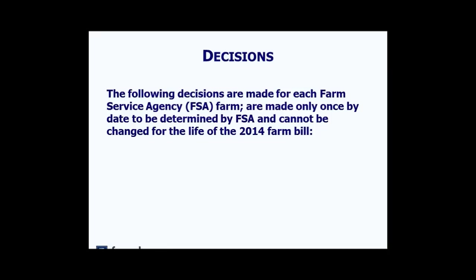For the adjusted gross income eligibility requirement, the farm/non-farm distinction from the last Farm Bill has been done away with, and we now have a single adjusted gross income threshold of $900,000. If you have earned over $900,000 on a three-year rolling average, you'll be ineligible for payments in the year following.